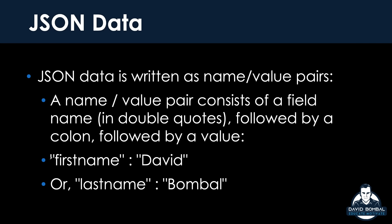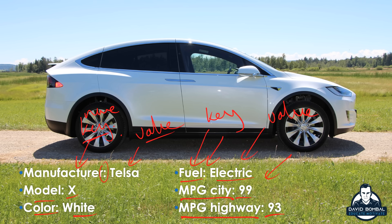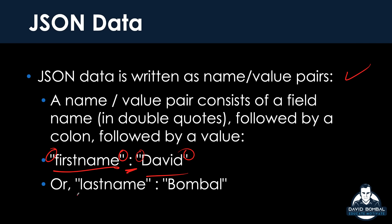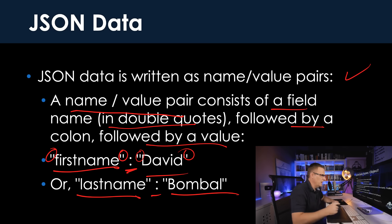JSON actually looks like this: we have to use double inverted commas. So it would be something like "first name" colon "David" as an example. JSON data is written as name-value pairs. It could also be referred to as key-value. A name-value pair consists of a field in double quotes, followed by a colon, followed by a value. Make sure you understand that format.